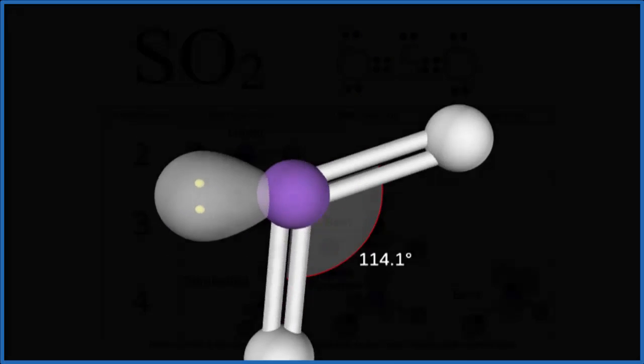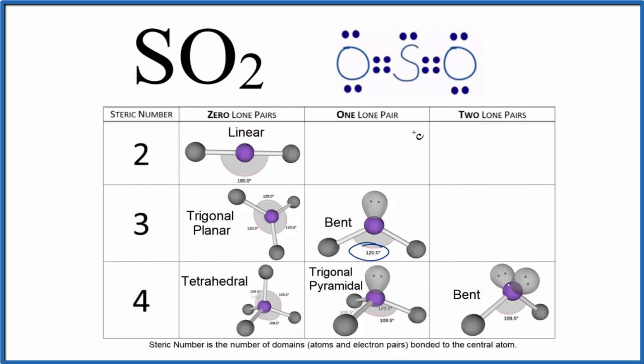We could also use the AXE notation to figure out the molecular geometry for SO2. A, that's the central atom, that's the sulfur. X, the number of atoms attached, one, two oxygen atoms. And E, that's the number of lone pairs, we have one. If you look up AX2E, you will find that it has a bent molecular geometry.